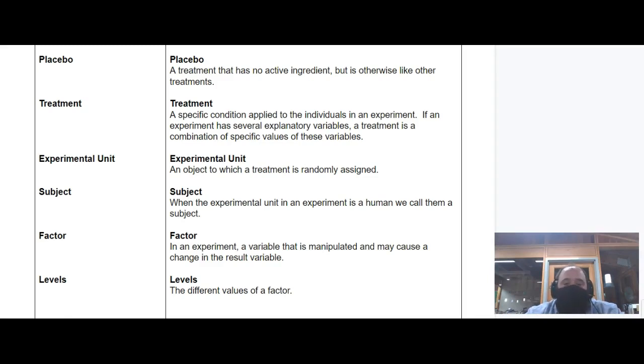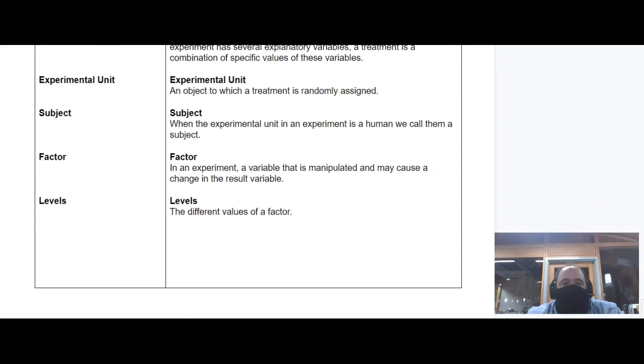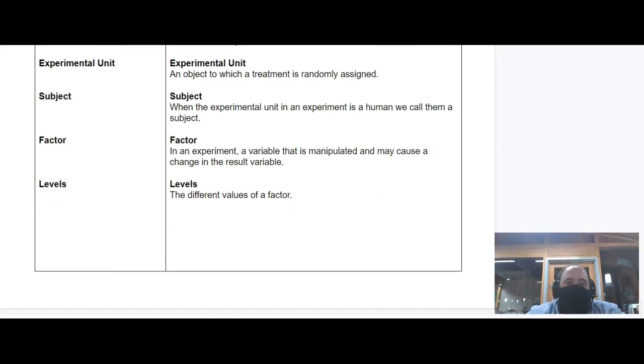The experimental unit is an object to which the treatment is assigned - either they're getting the treatment or they're not. If those experimental units happen to be human, we call them subjects instead of units because I wouldn't want to be called a unit, so I'm the subject of the experiment.